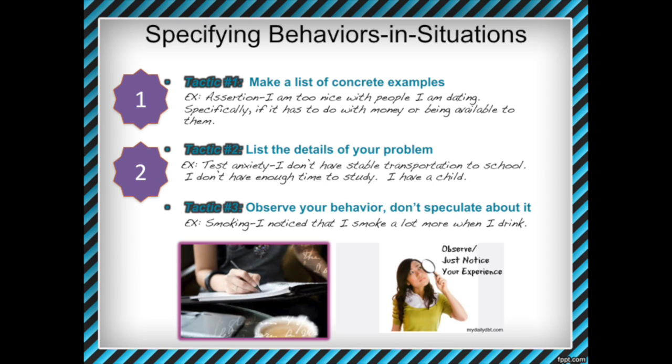Tactic three doesn't have a lecture activity, so it's not something we can do right now. But just as a way to become more aware of your bad behavior, one thing you can do is observe your behavior — don't speculate about it. Start trying to notice when you're doing your bad behavior. Notice the thoughts you're having, the feelings you're having, the people you're around, the situation you're in.